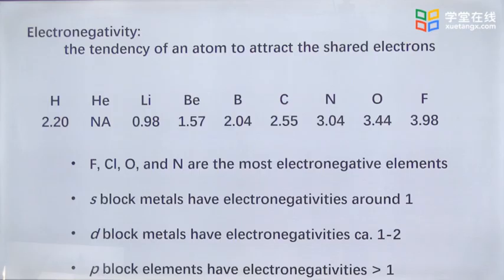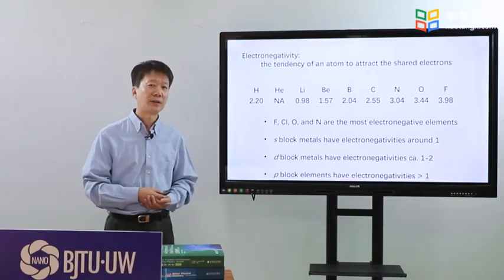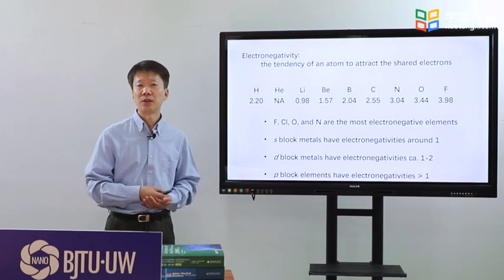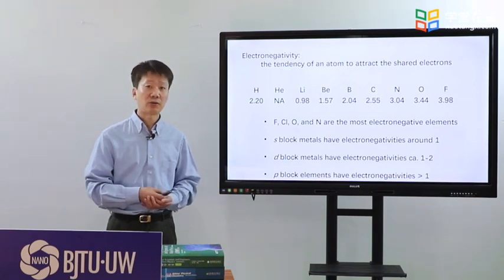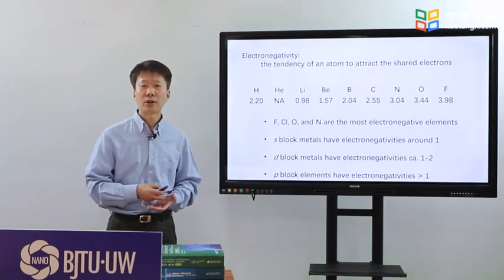Electronegativity is commonly used to describe the electron withdrawing ability of an atom. It characterizes the tendency of an atom to attract the shared electrons.